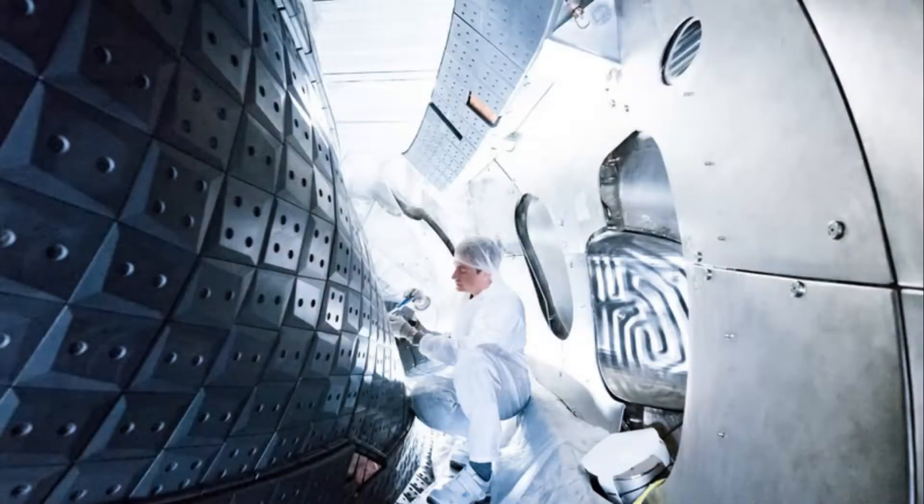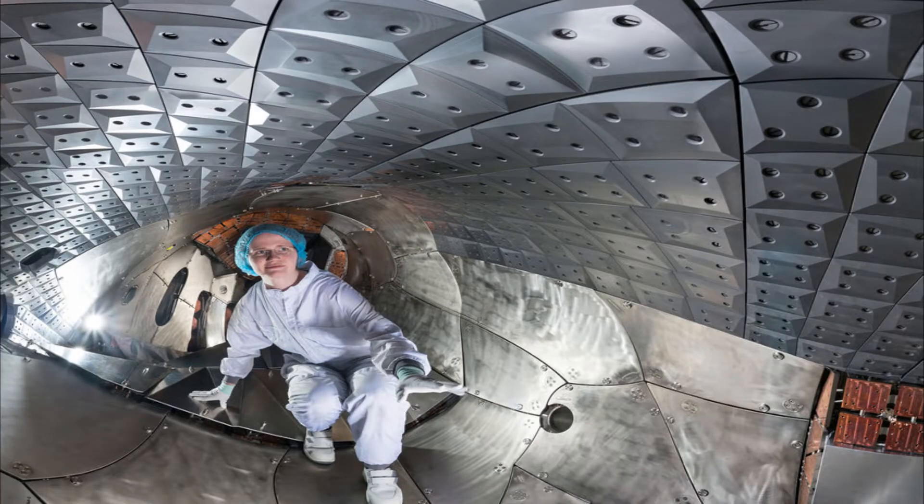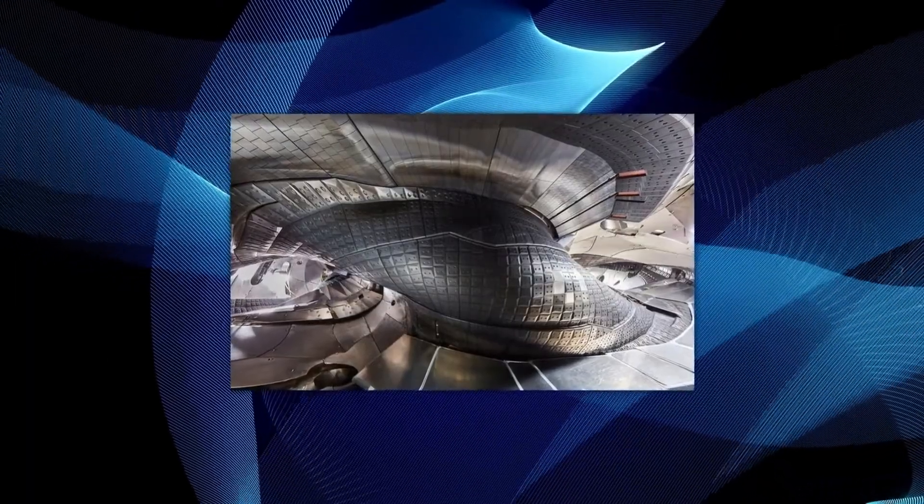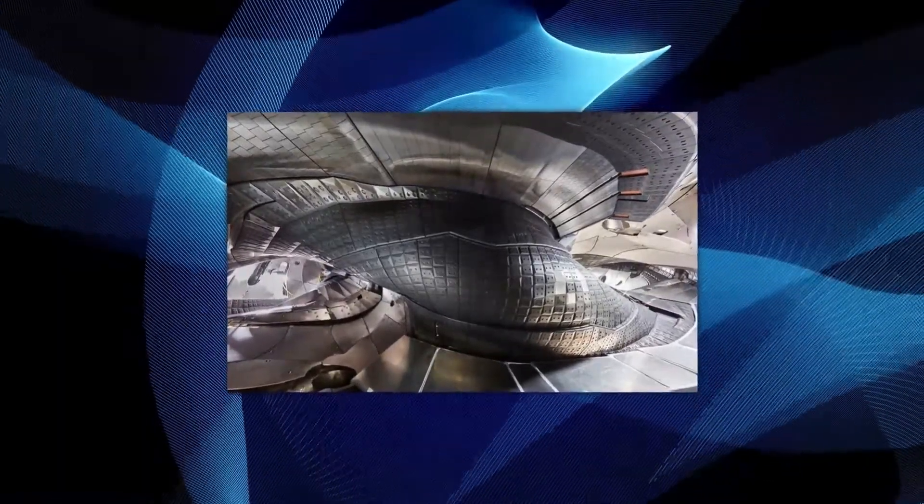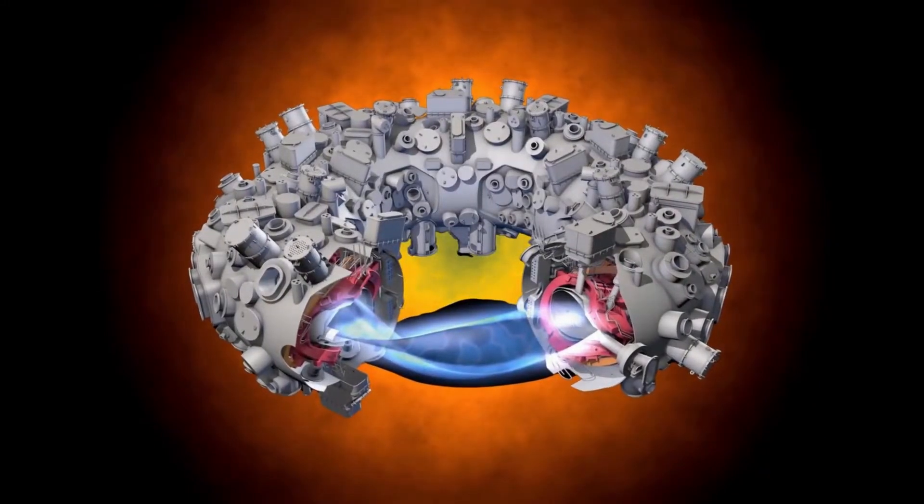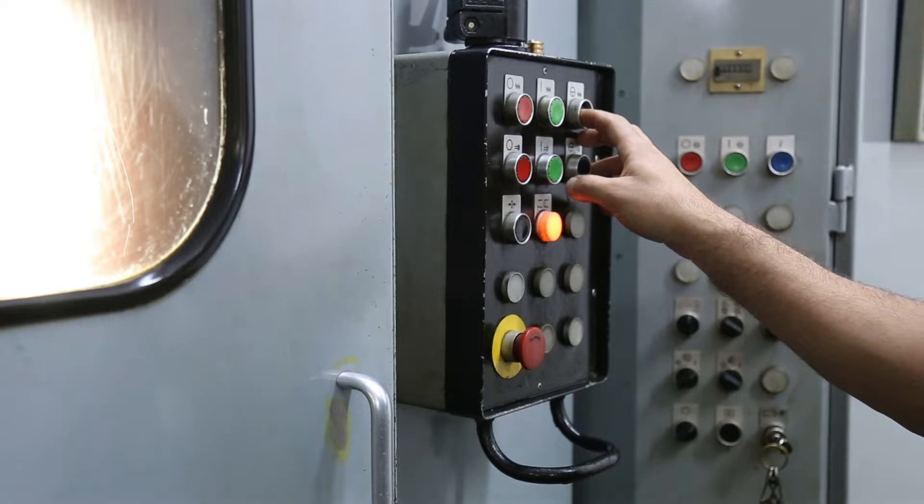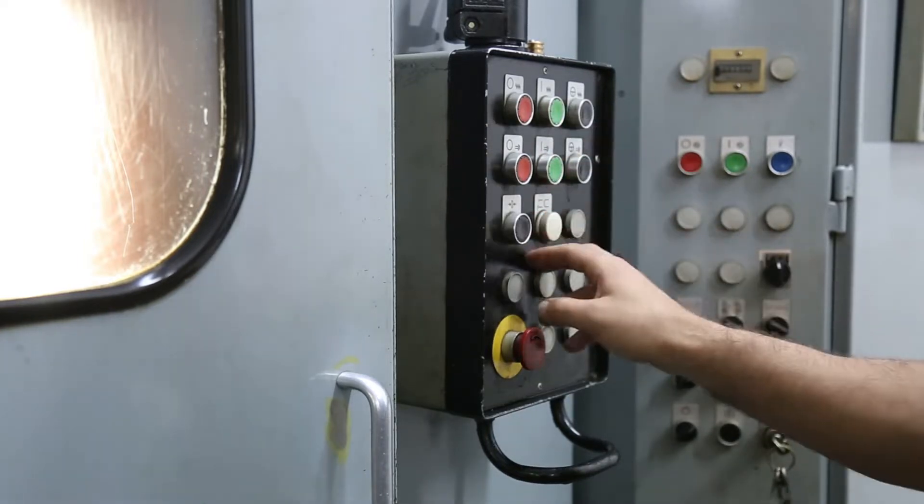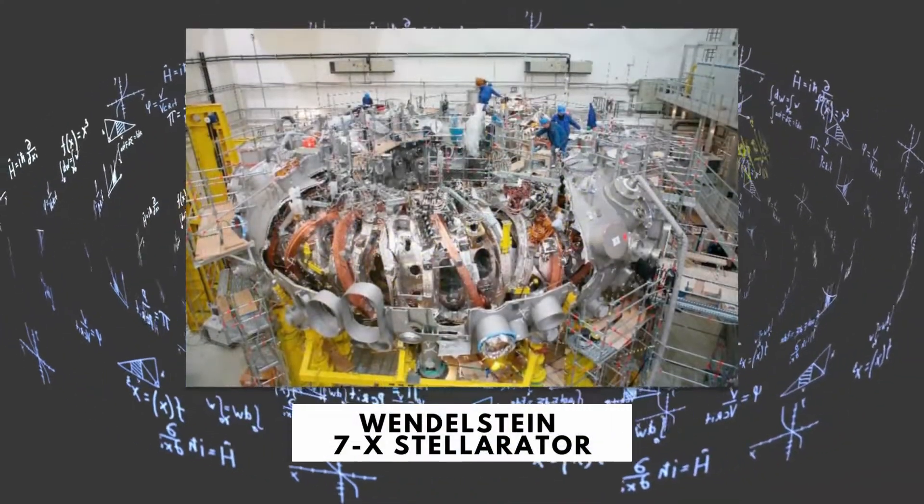The inside wall of the Wendelstein 7X has been upgraded to include graphite tiles, which has made it possible to reach greater temperatures. This interior liner, known as a diverter, safeguards the swirling chamber walls while also enabling the operators to pump more plasma at higher temperatures. This provides the operators with more management over the hydrogen plasma's density as well as its purity.